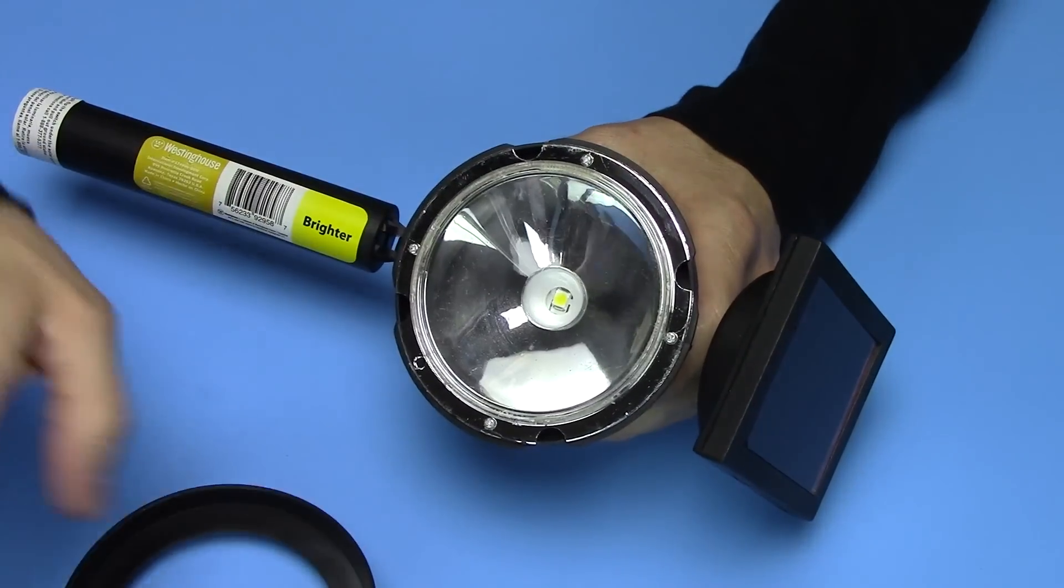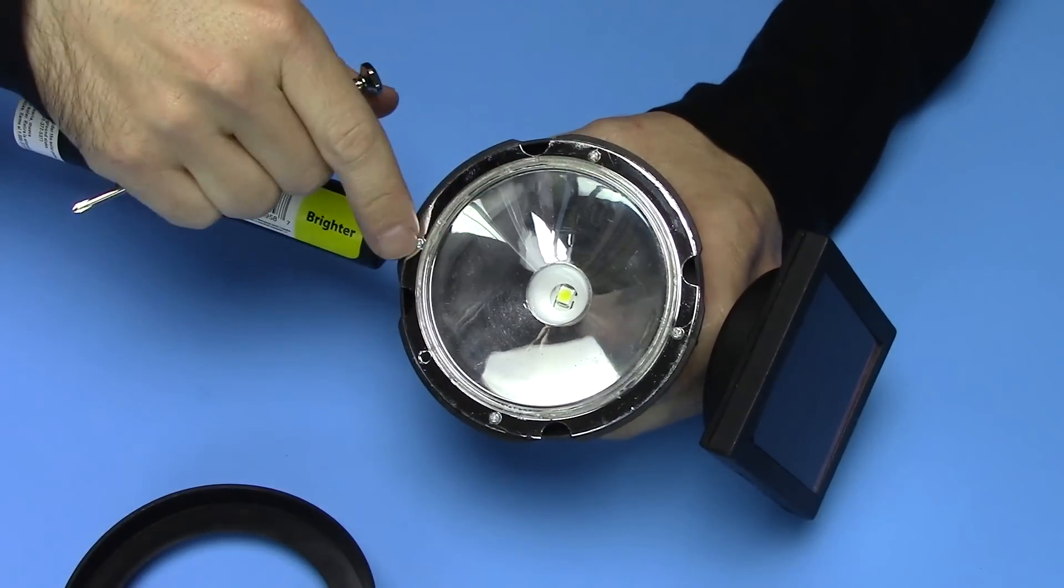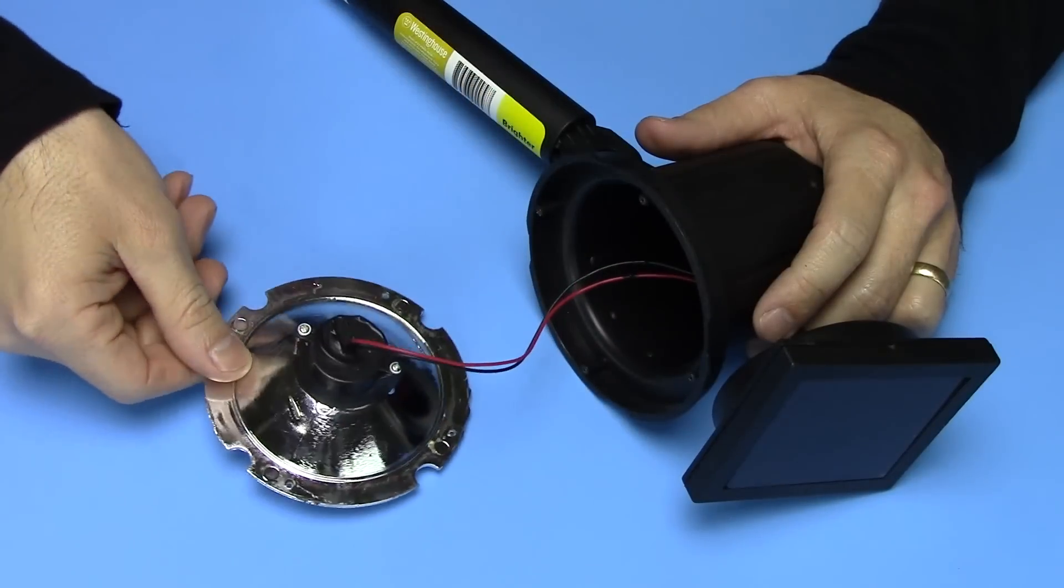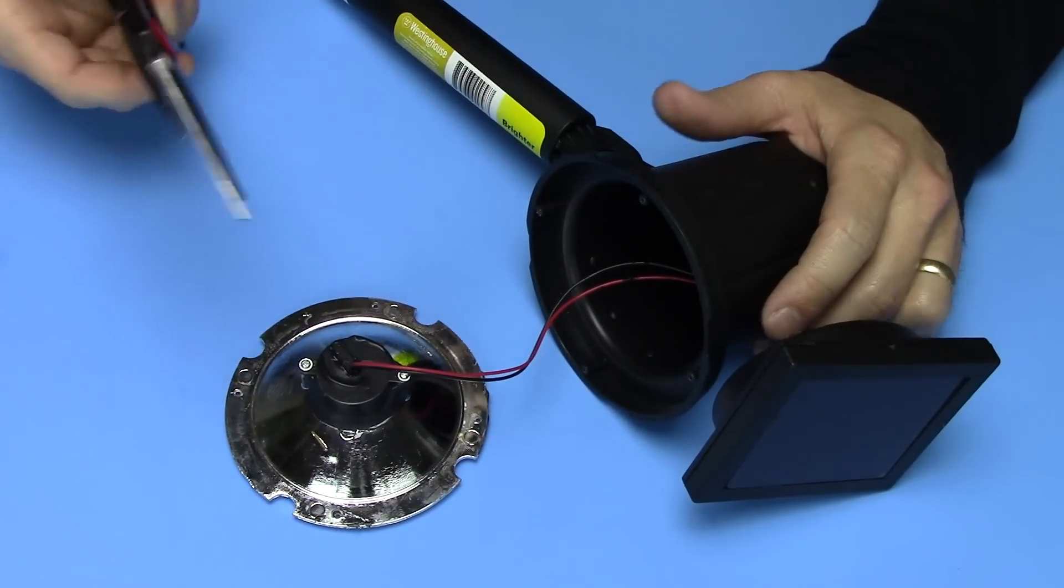Now remove your cover and remove the four screws. Now go ahead and remove your light and cut your wire. This one is a red and black.